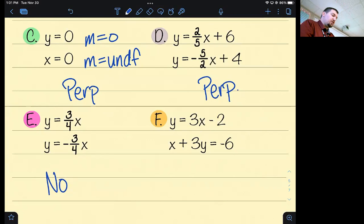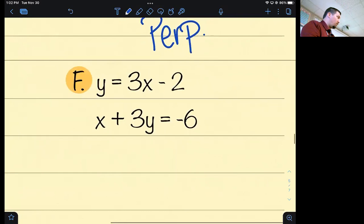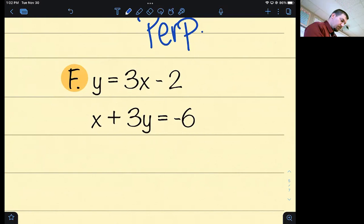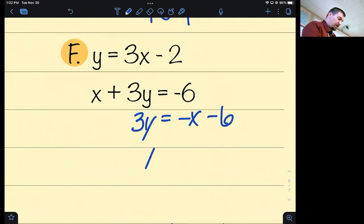What about y equals 3x minus 2 and x plus 3y equals negative 6? Can we tell right now if they're perpendicular? No, we cannot. Julia, would you convert the bottom equation to slope-intercept form? Walk me through the steps. Subtract x from both sides. What's negative 1 divided by 3? Negative one third. Good. And negative 6 divided by 3 is negative 2.